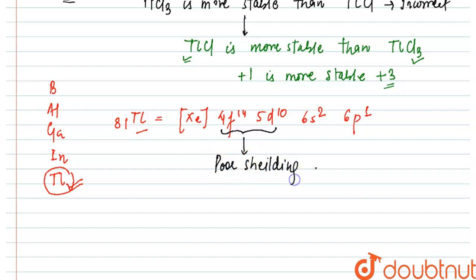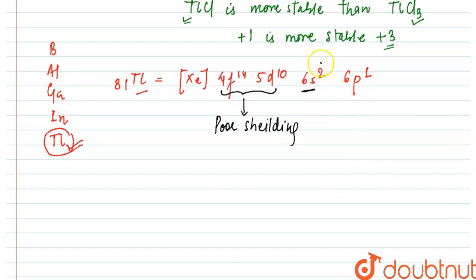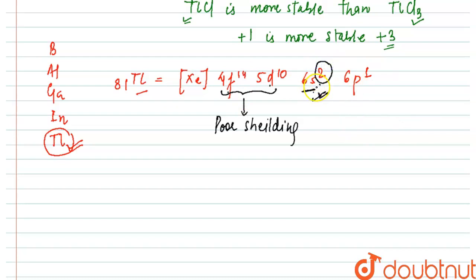Due to the poor shielding, the 6s orbital electrons will get bonded with the nucleus more firmly, because the F and D orbitals fail to properly shield the effect of the nucleus. As a result, the 6s shell gets attached to the nucleus in a much stronger, firmer way. Due to this reason, the two electrons from the 6s orbital become inert. This entire theory is called the inert pair effect.